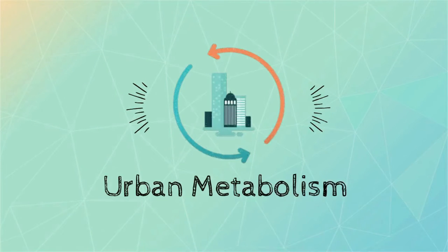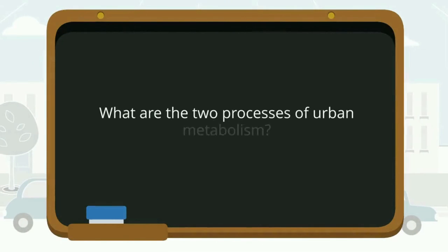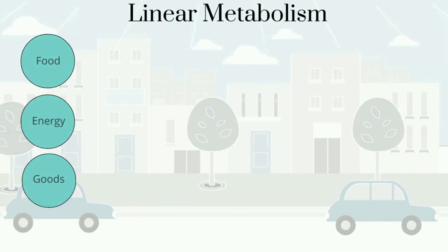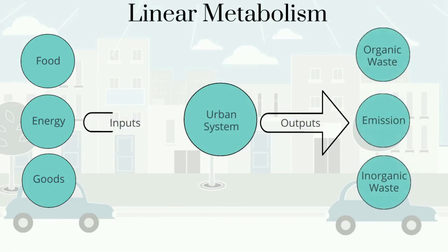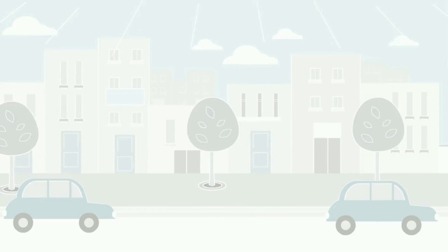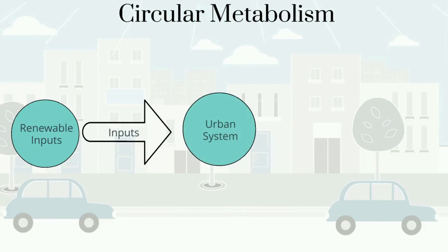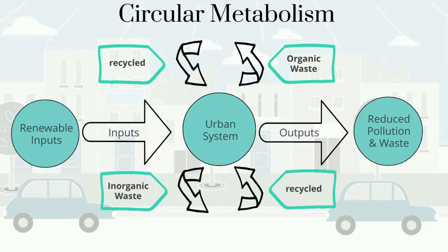Urban metabolism. There are 2 processes involved in urban metabolism. Firstly, linear metabolism, also known as a cradle-to-grave system, where outputs are released to the environment. Second, circular metabolism, where the outputs — waste — are recycled back into the system, reducing pollution emission.